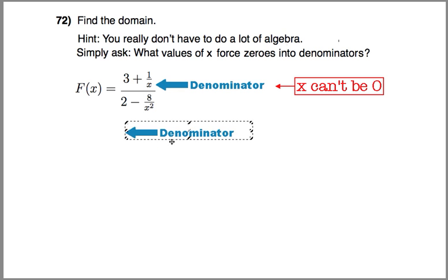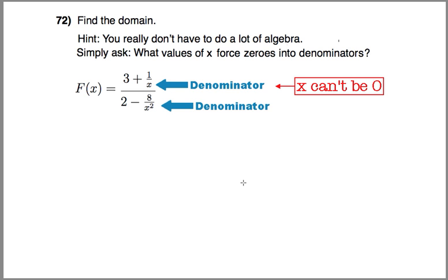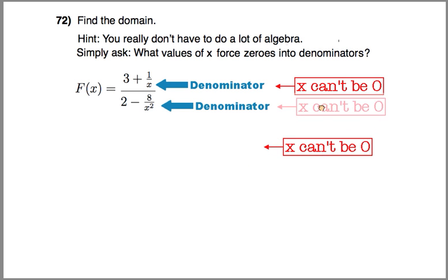All right, here's another very visible denominator. This sub-fraction, 8 over x squared. We can never let that denominator go to zero. And again, the only value of x that will cause that to happen is when x is equal to zero. And so, the restriction is the same as the one above it. x can't be zero.